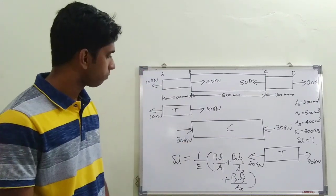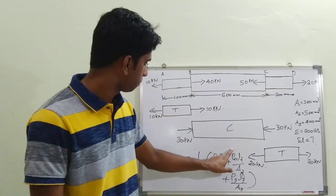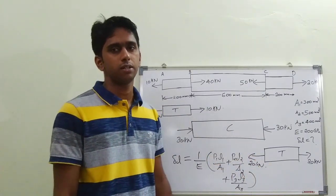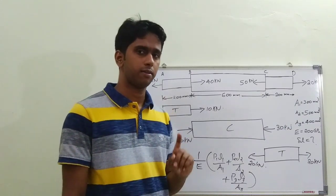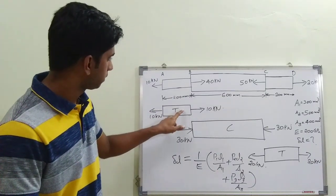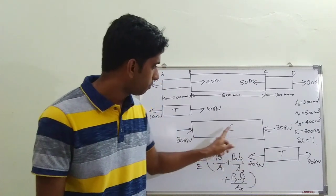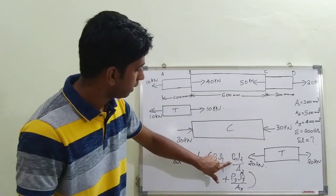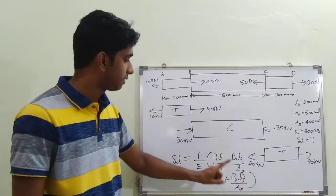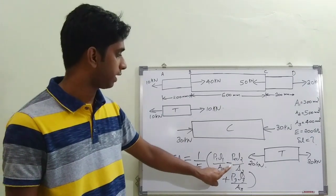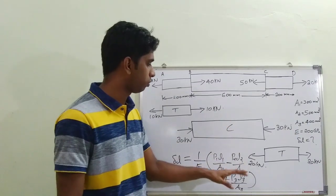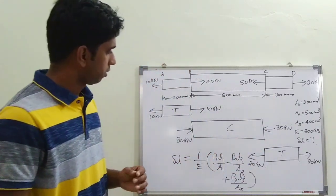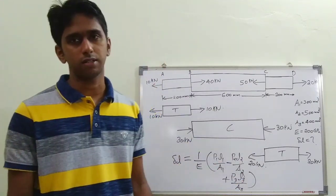Here, P1 = 10 kN, P2 = 30 kN, and P3 = 20 kN. Lengths and areas are given, so just substitute and find the total deformation. One very important thing: section AB is in tension, section CD is also in tension, but section BC is in compression. For the compression section, you must put a negative sign instead of a positive sign, because under tension the length increases while under compression the length decreases.